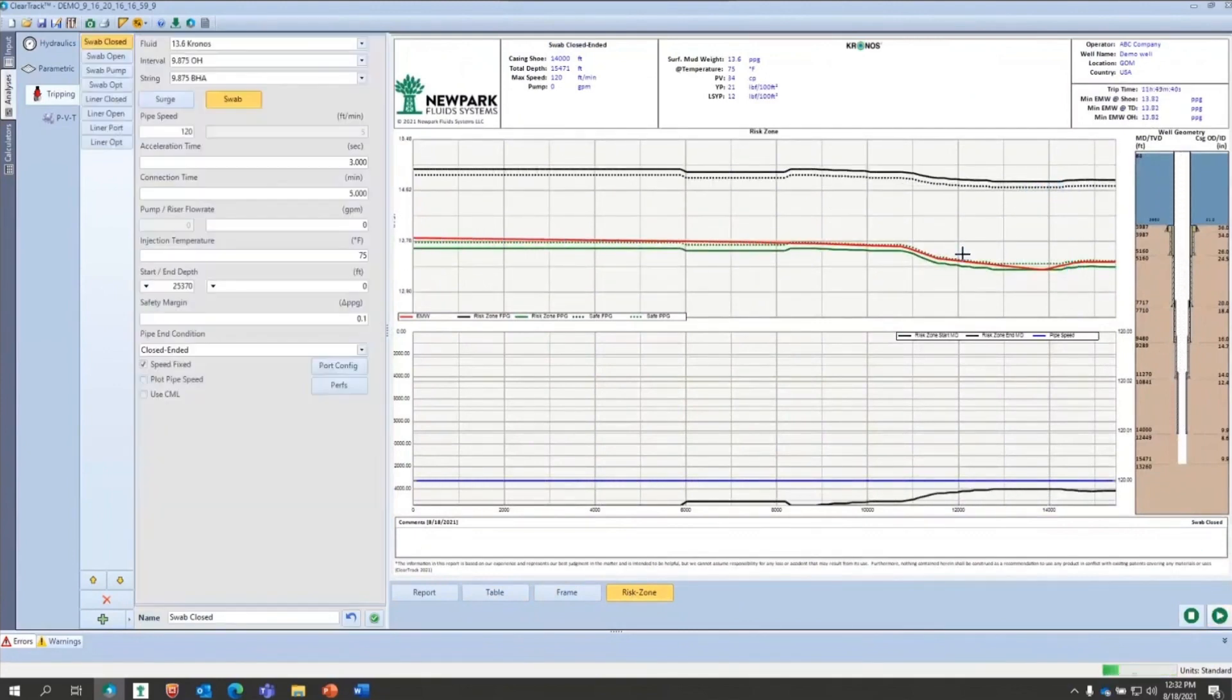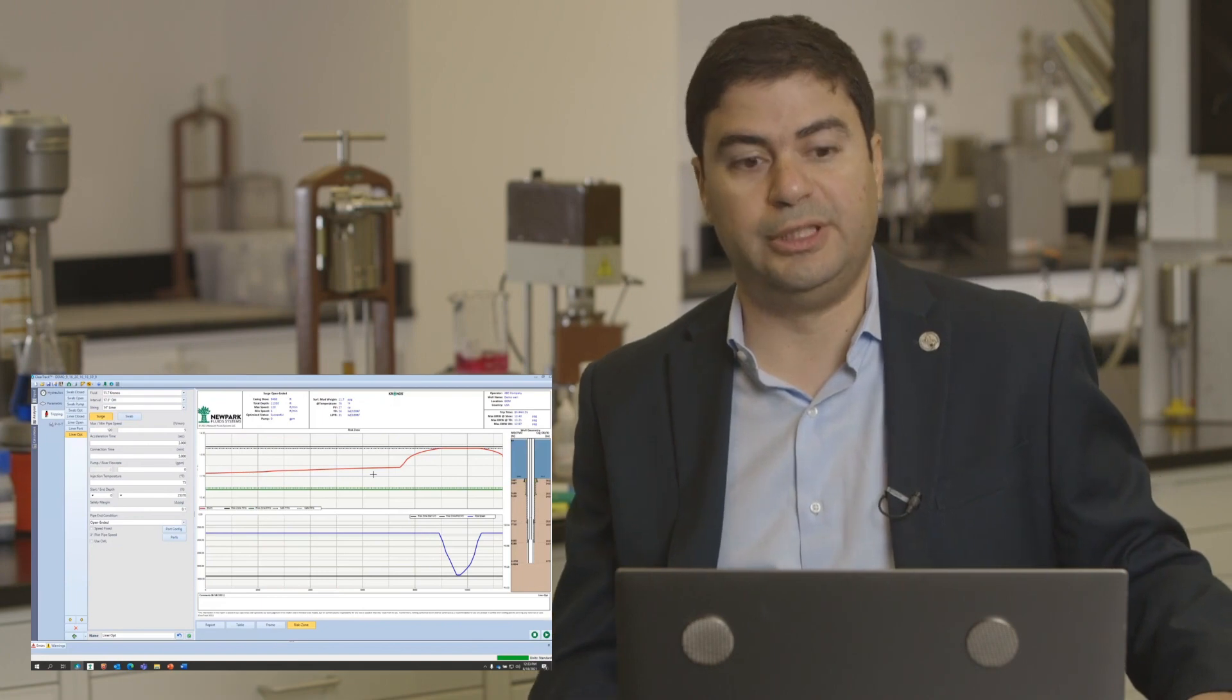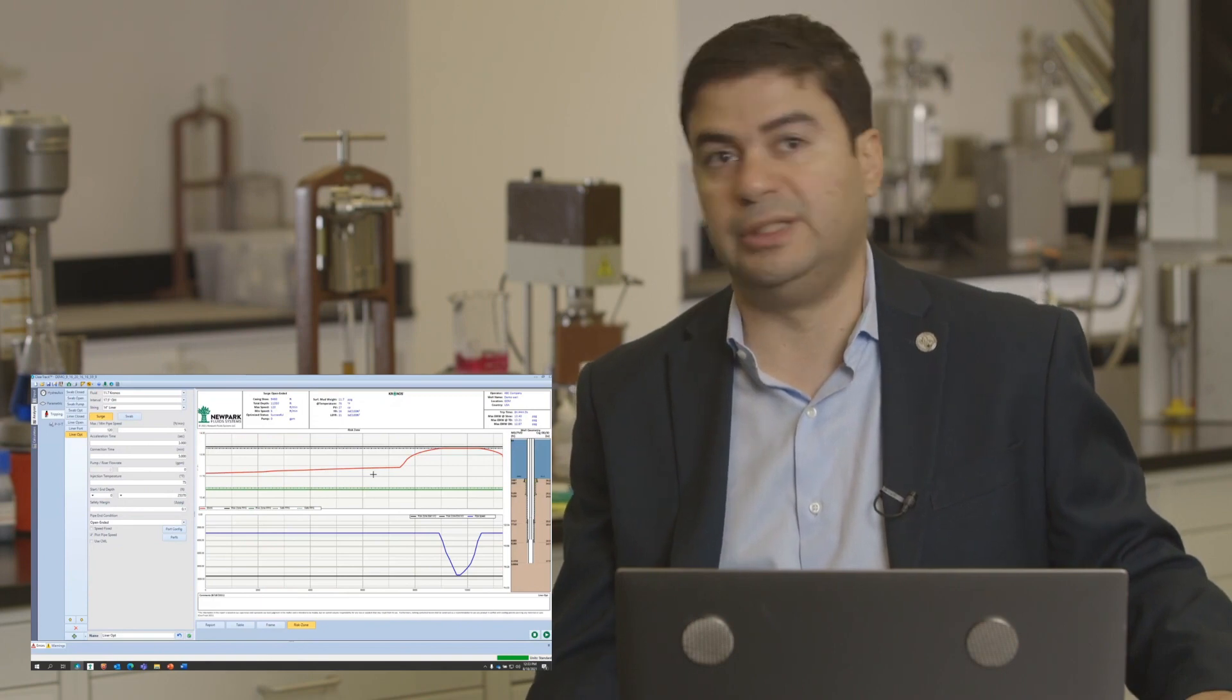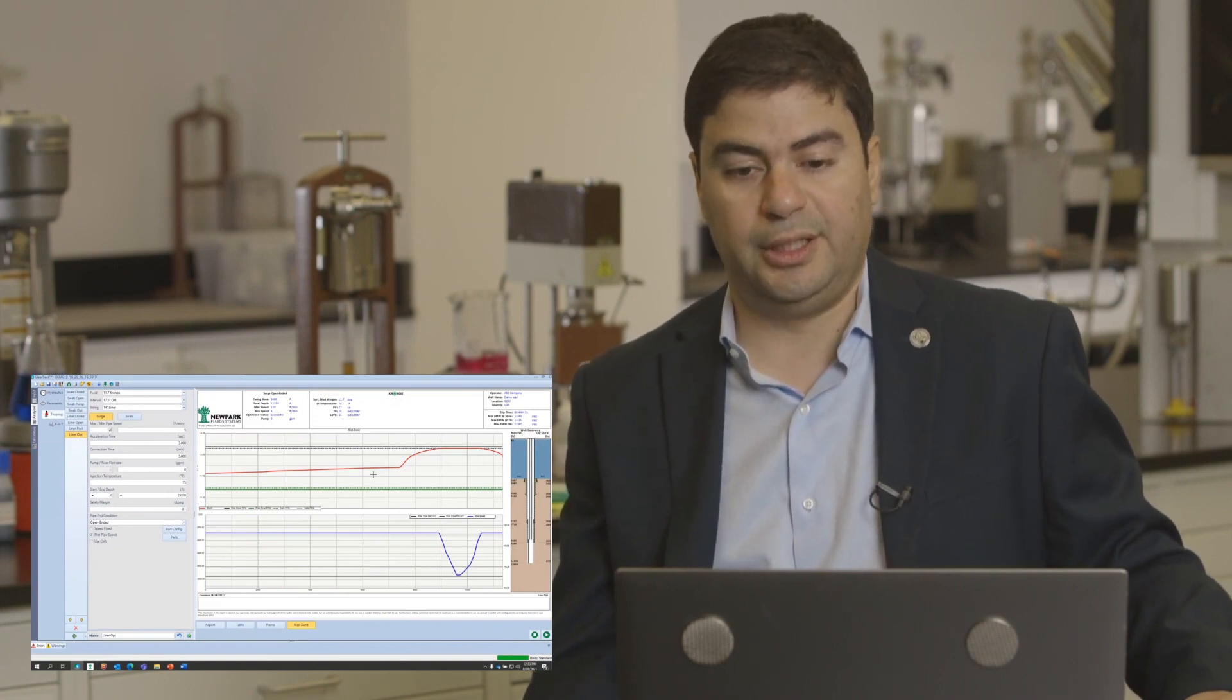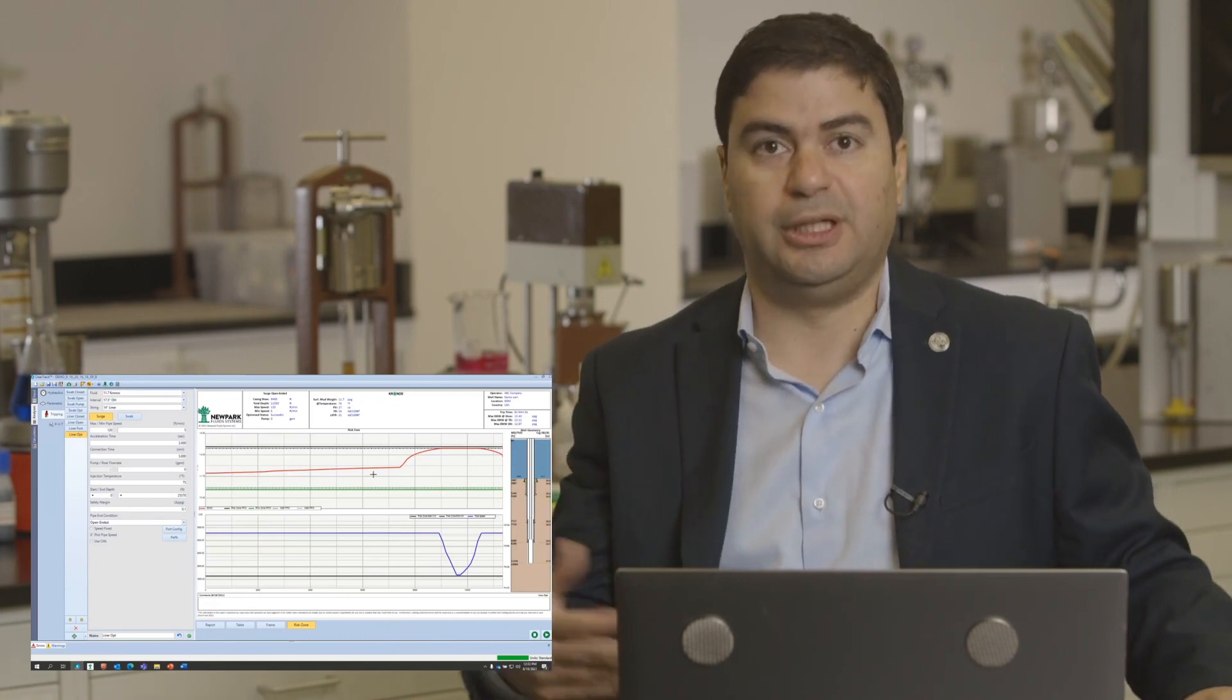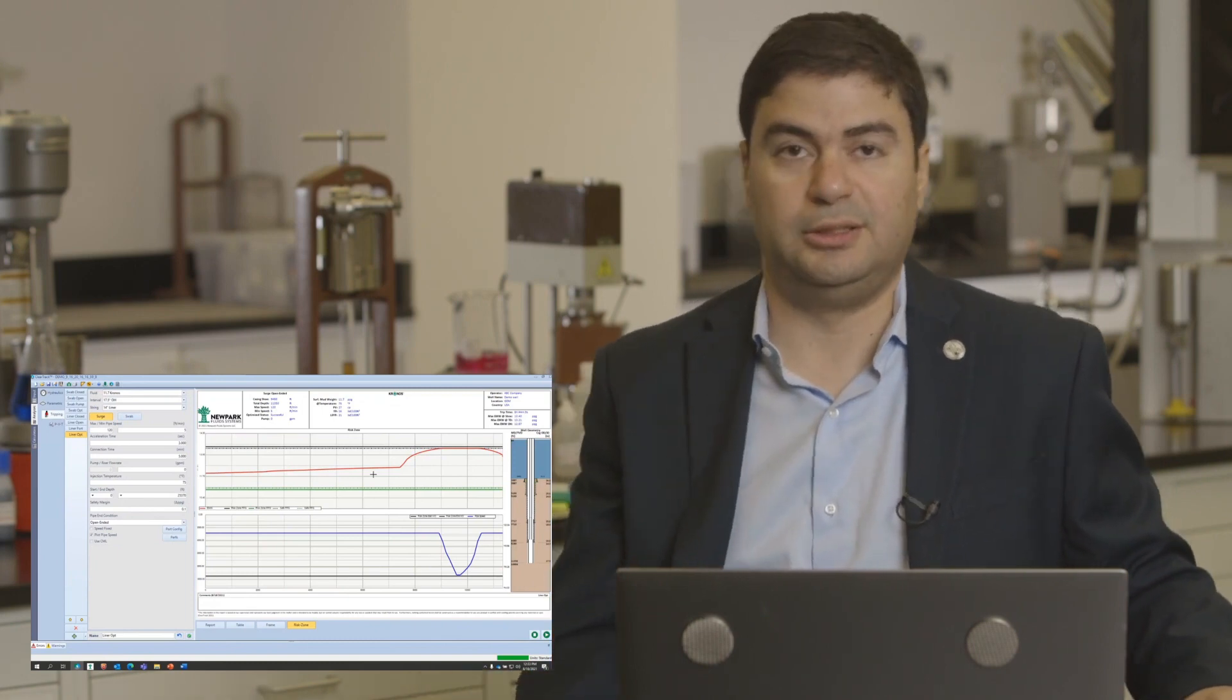The software allows you to run different simulations, whether fixed running speed, which is basically what a rig would do, or help you take over and automatically optimize that tripping speed to stay within that window. It will give you flags on where your risk zone is, is it on bottom, is it the casing shoe, and will give you a pipe tally of, okay, this is the pipe speed at this stage.